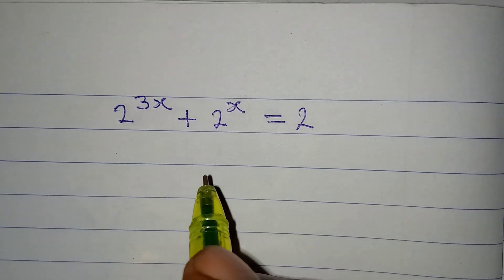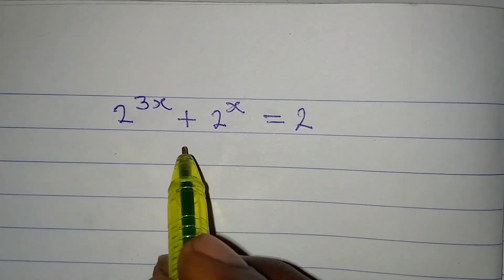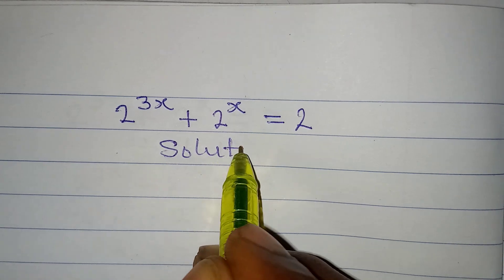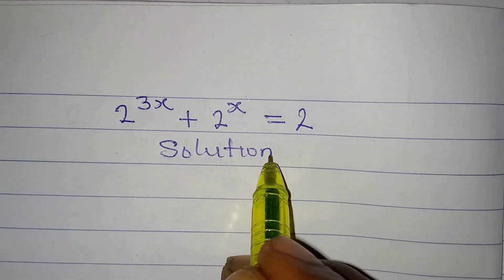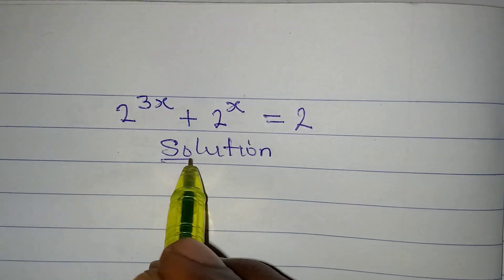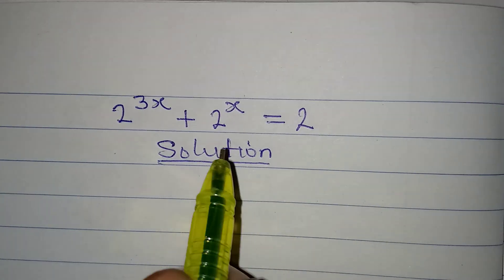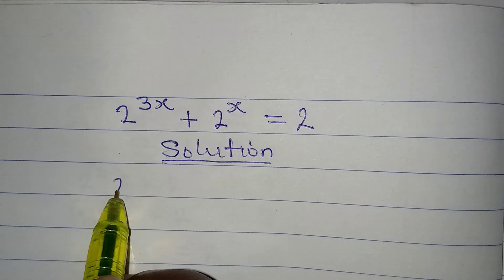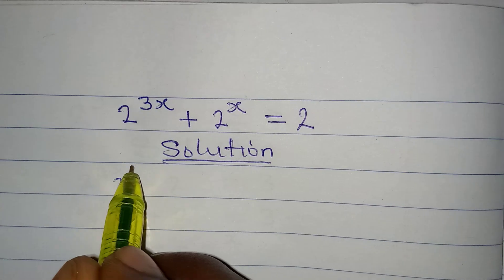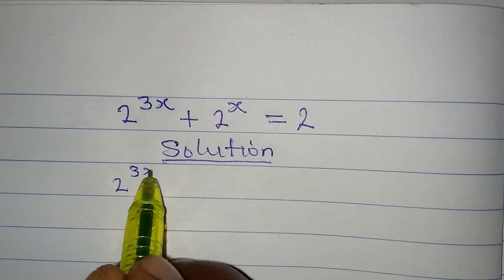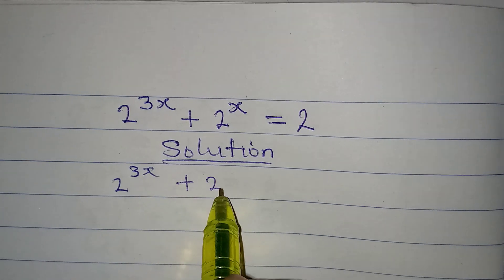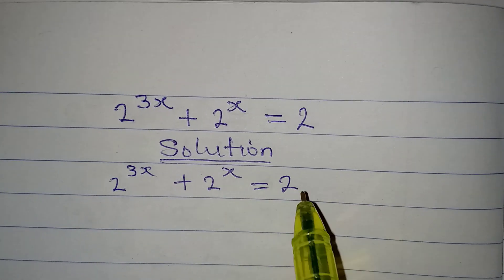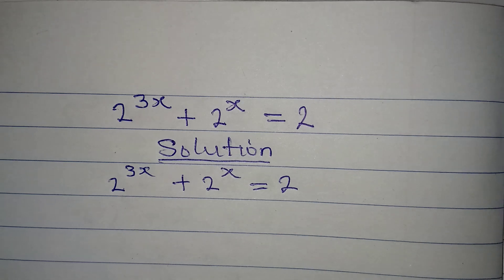Hello everyone, welcome to Few Cool Math where we solve math problems in detail. This is what we have before us today: 2 to the power of 3x plus 2 to the power of x equals 2.